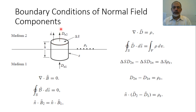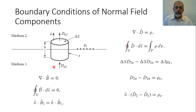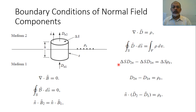For the upper surface, the normal direction is at the same direction as the normal at the interface, so D·dS gives D_normal2 multiplied by the surface area ΔS. For the lower surface, the normal is in the opposite direction, so D·dS gives −D_normal1 · ΔS. The integration over the closed surface is therefore D_normal2 · ΔS minus D_normal1 · ΔS.